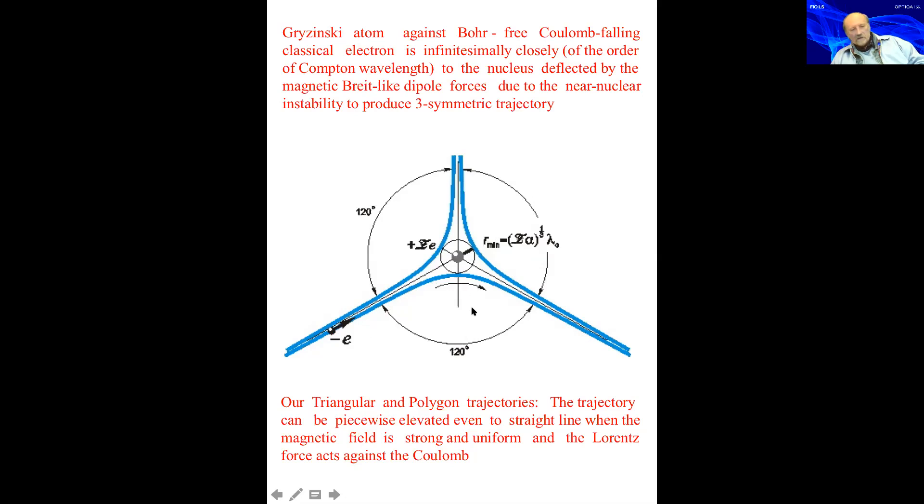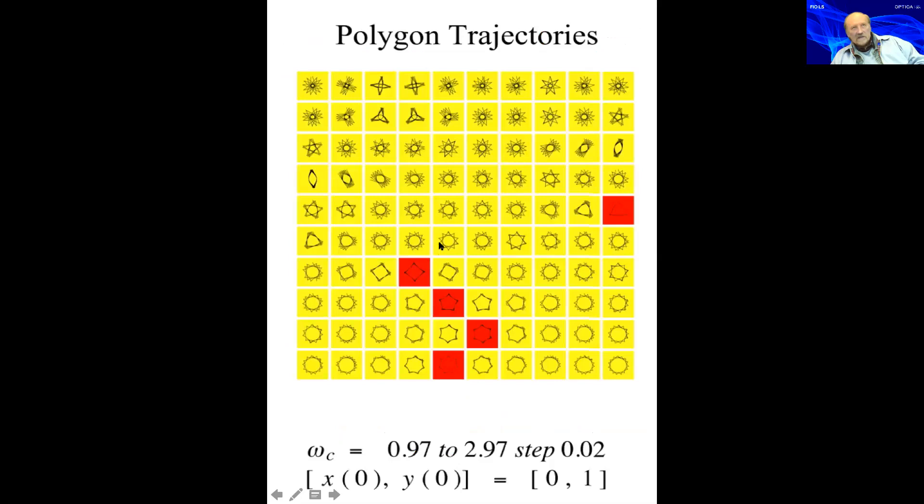What we did is we added the magnetic field perpendicular to the plane of the motion, and we obtained truly triangular trajectories and truly polygonal trajectories, not only triangular but polygonal, depending on the strength of the magnetic field and the initial conditions for resonant values. You obtain, for example, square, pentagon, heptagon, triangle.